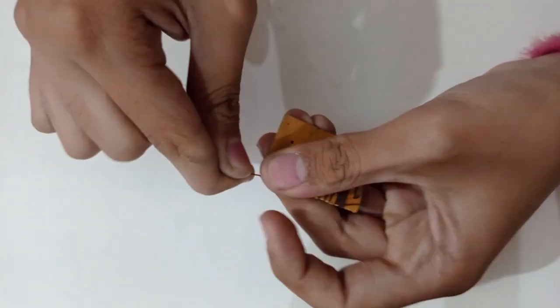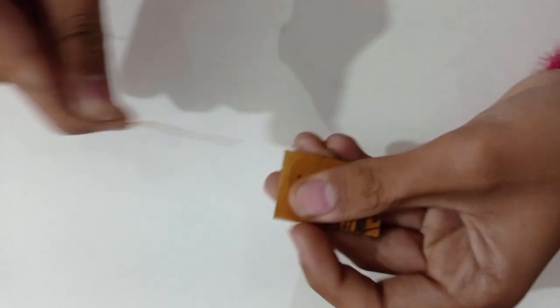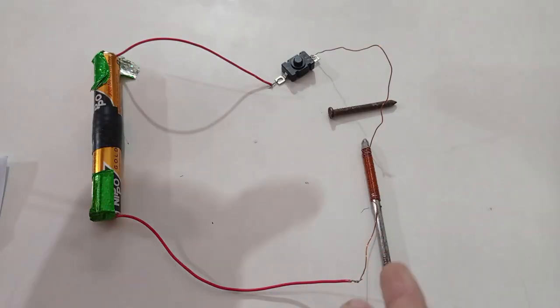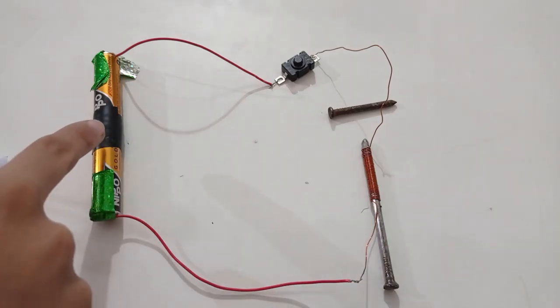Remove insulation from both ends using sandpaper. Connect the free ends of the wire to the terminals of the battery through a switch.